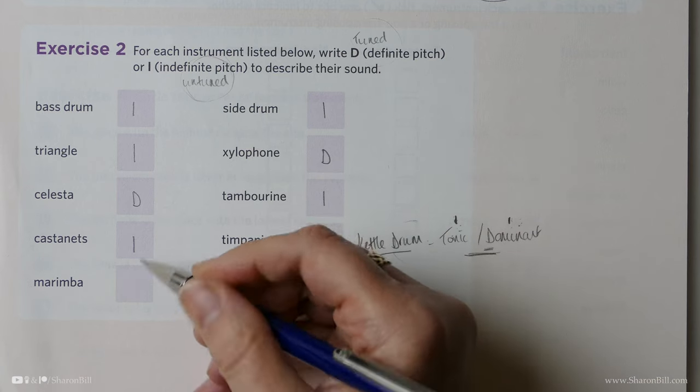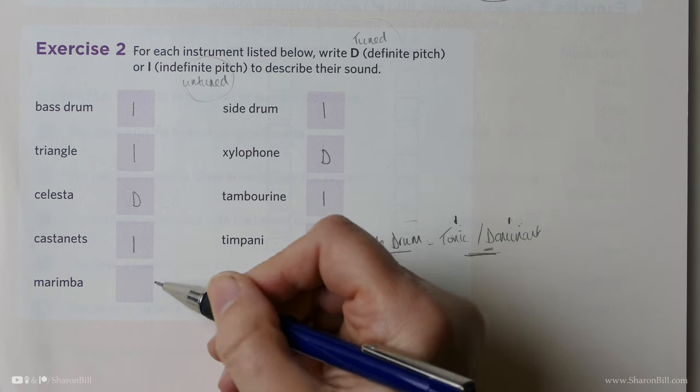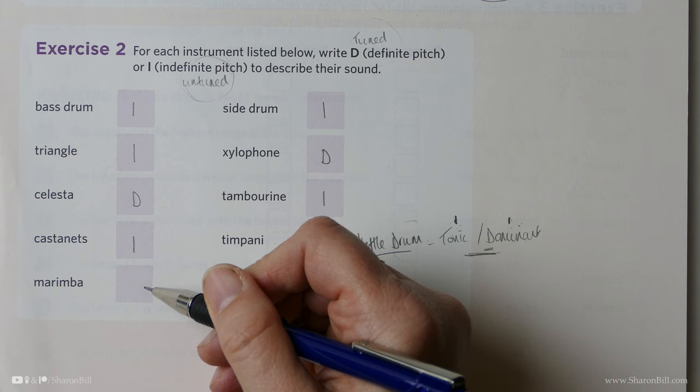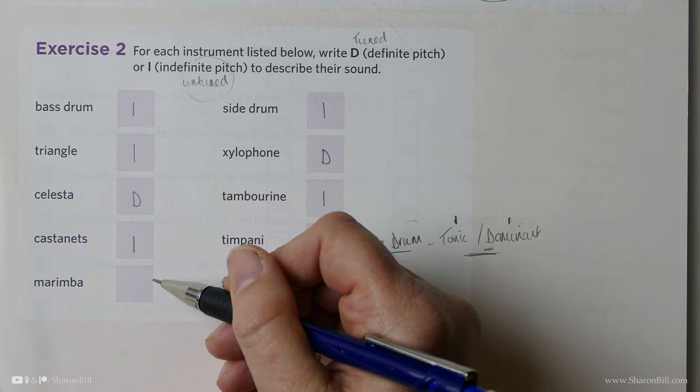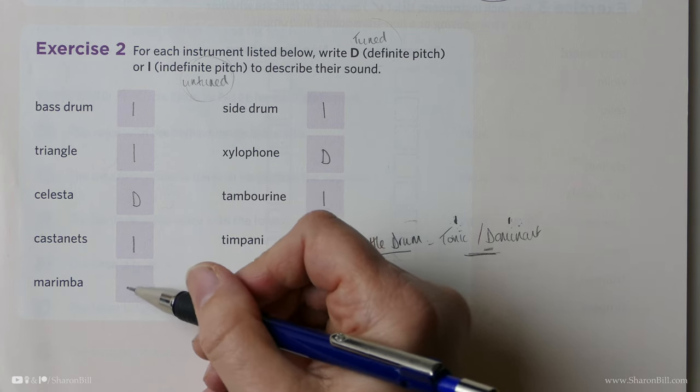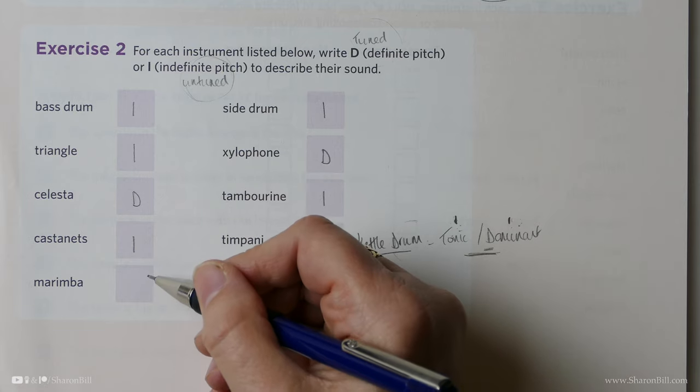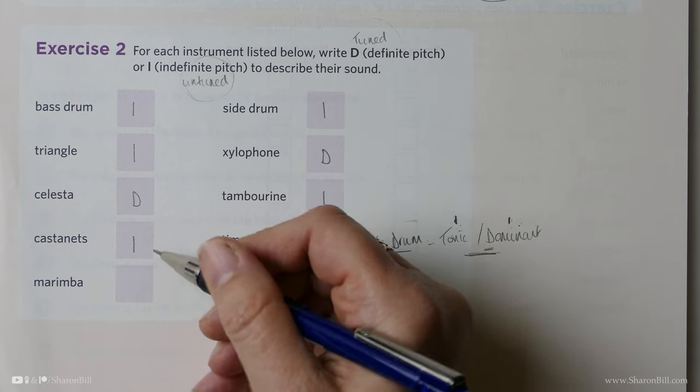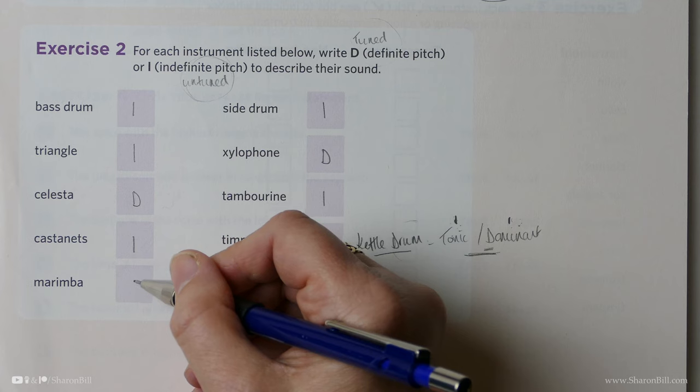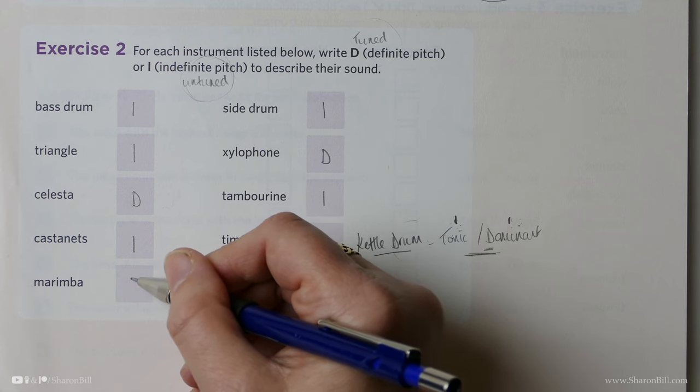The marimba is like a xylophone. However, it's got bigger tubes rather than bars and that gives it more resonance. They tend to use softer mallets as well for a different effect. But we can definitely play tunes on that. It's definite pitch.